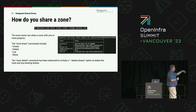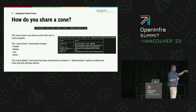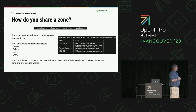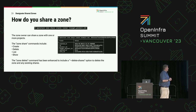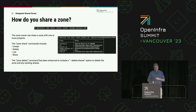You can look at the data model for a zone share record — pretty simple and straightforward. Somebody's going to own that zone share, and that's typically going to be the parent zone owner — that's the project ID listed there. The target project ID is who you're sharing with. You'll have multiple records like this if you share with multiple projects, and of course the zone that you're sharing with that other project.